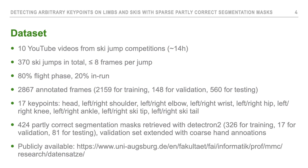In order to have a publicly available benchmark, we introduce a new dataset. We use 10 videos from YouTube from ski jump competitions with around 14 hours of video material. These videos contain 370 ski jumps in total, and we annotate at most 8 frames per jump to get a wide variety of images. 80% of the images are from the flight phase and around 20% from the in-run phase. In total we have around 2800 annotated frames, split into a training, validation, and test set, where each athlete is only contained in one dataset.